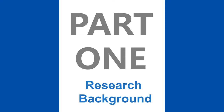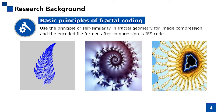The first part is the Research Background. Fractal Image Coding is a lossy compression algorithm that uses the principle of self-similarity in fractal geometry to compress images. The encoded file formed after compression is IFSCode, and the data storage capacity of IFSCode is much smaller than the original image.